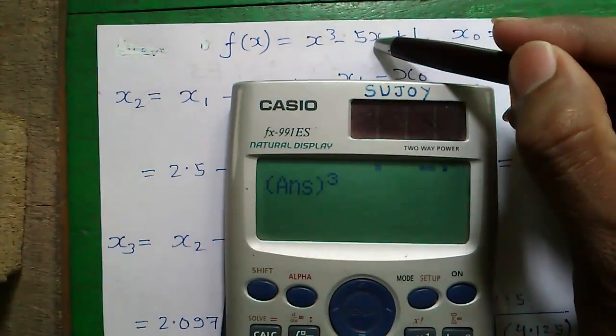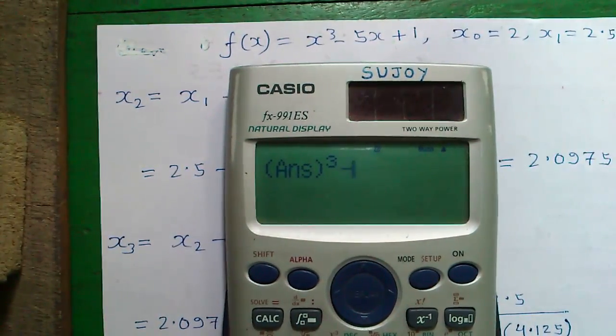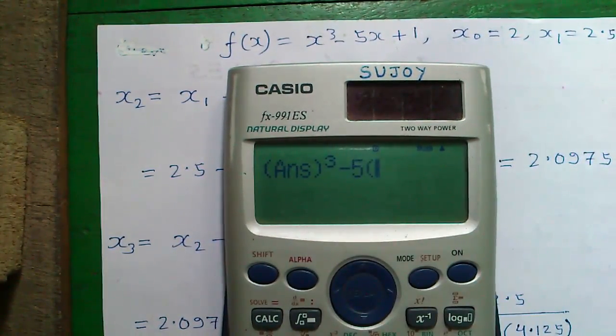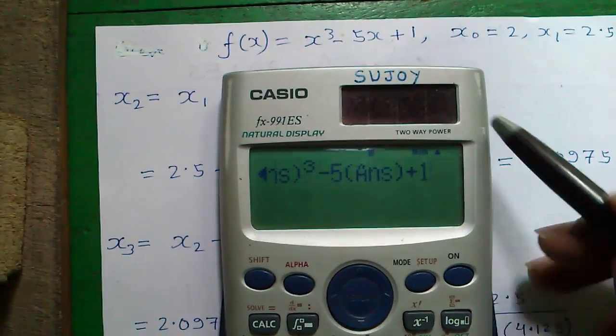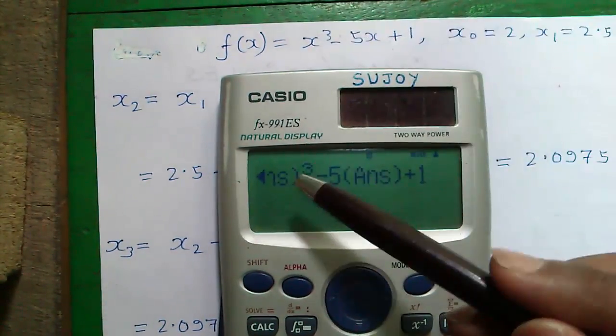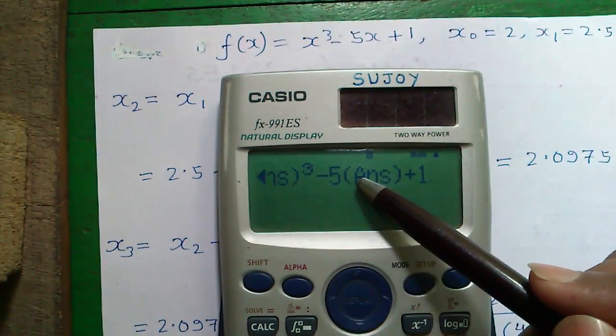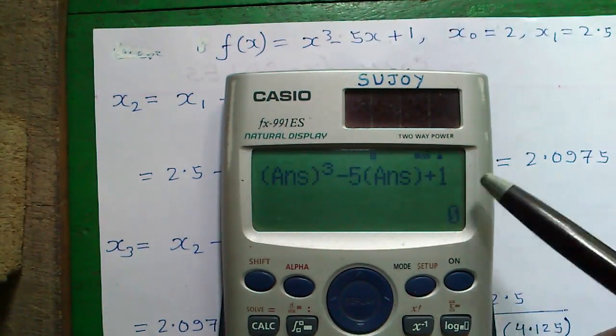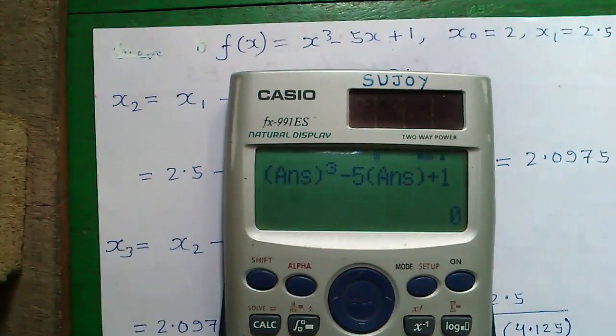So answer³ - 5 × answer + 1. So in place of x we are using our answer value. And press equals to. So you will get = 0. That is the meaning of root.